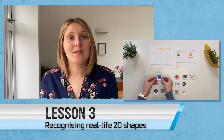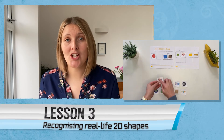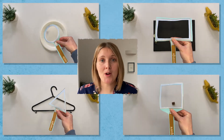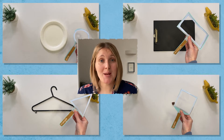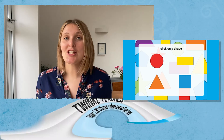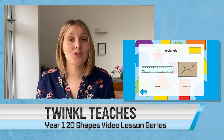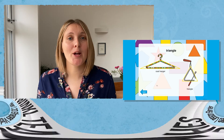Lesson three aims to give children the experience of recognising 2D shapes within their local environment. It starts off with a fun sorting activity, and then children are encouraged to explore their own surroundings, identifying any 2D shapes they can find. Finishing off with a quiz, this video lesson series is great for introducing, extending, and consolidating learning all about 2D shapes for Year One children.